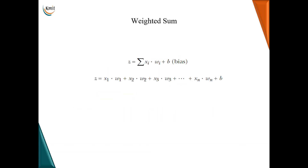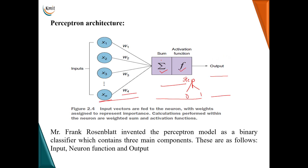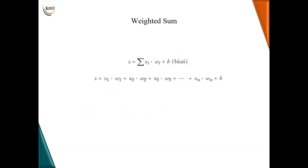Talking about the neuron function, a neuron performs two operations: one is the weighted sum and the second is the activation function. The weighted sum output is the summation of all inputs multiplied by their corresponding weights, plus an extra parameter called bias. Bias is an extra weight used while learning and adjusting the neuron to minimize the cost function.